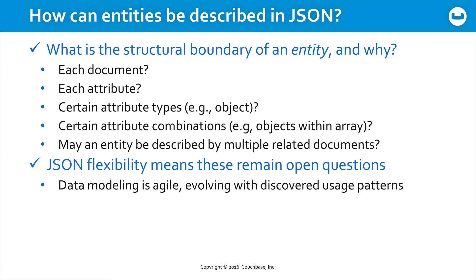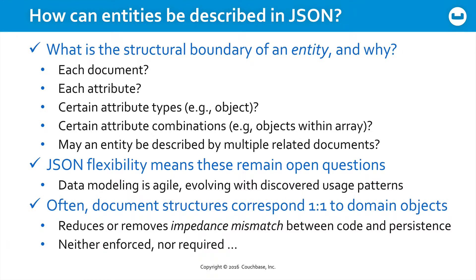The data modeling is agile, and it's going to evolve with your discovered usage patterns. However, as a general rule, normally in document databases, each document would best correspond one-to-one with your domain objects, if you have a choice to model in this way. Doing this reduces, or completely removes, what's known as the impedance mismatch between your code and your persistence. It lowers the barrier in getting your data into object form inside your code. But this relationship is not enforced or required, it's simply a good practice.